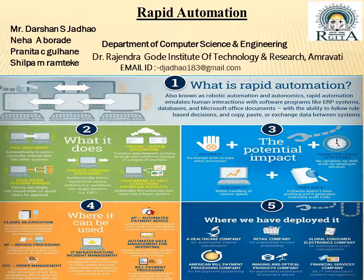The Potential Impact — there are four types: Accuracy, Scalability, Compliance, and Round-the-Clock Operation. In Accuracy, there are no human errors in data entry processing. In Scalability, it offers better handling of volume spikes with no vacancies or shift work required, freeing employee attention.